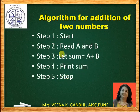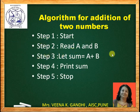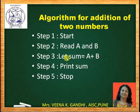Suppose, for example, we want to add two numbers. Step one will always be start. Then accept two numbers A and B — we will write: read A and B. Step three will be: sum = A + B. We want to add two numbers A plus B and store in a variable sum. Step four will be: print sum. And step five will be: stop.